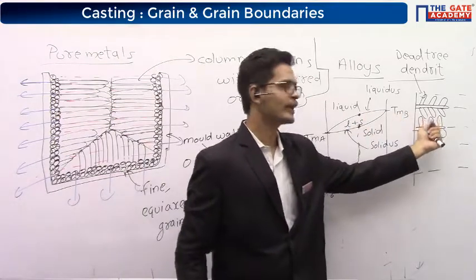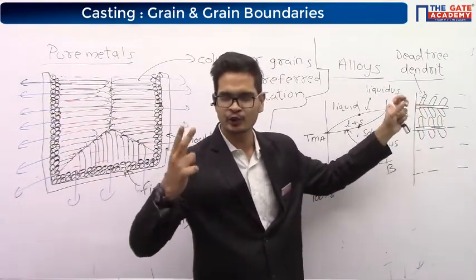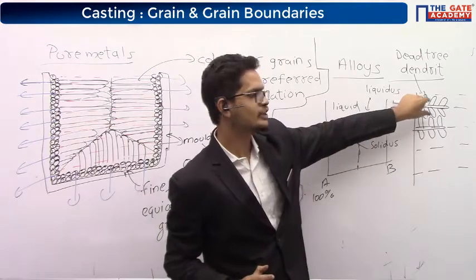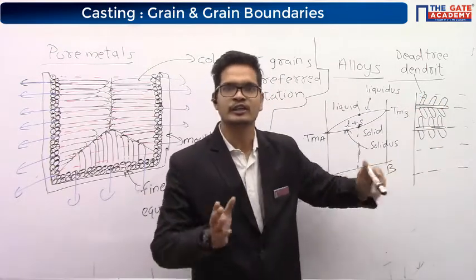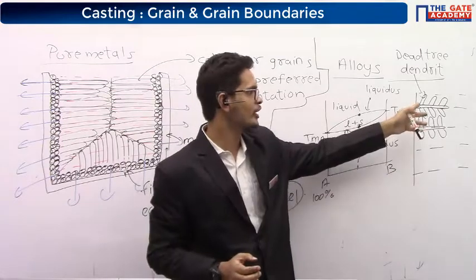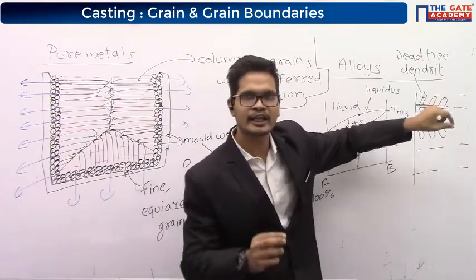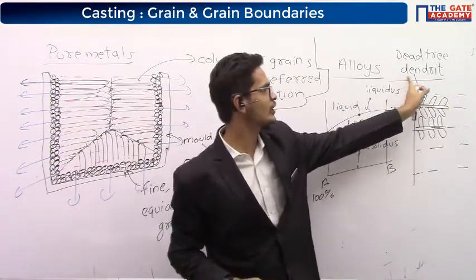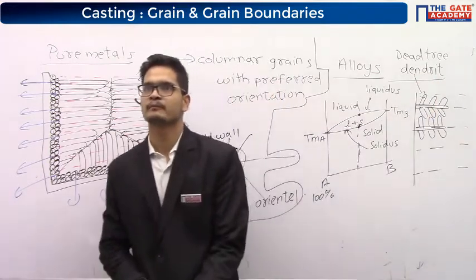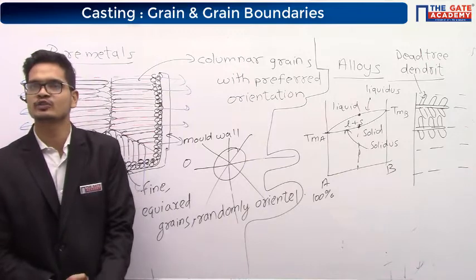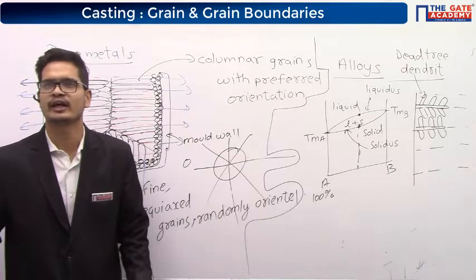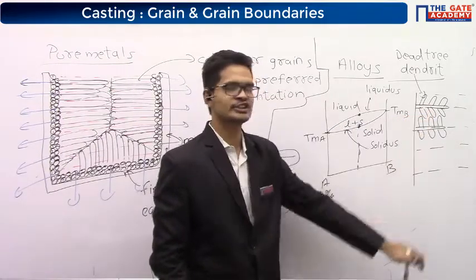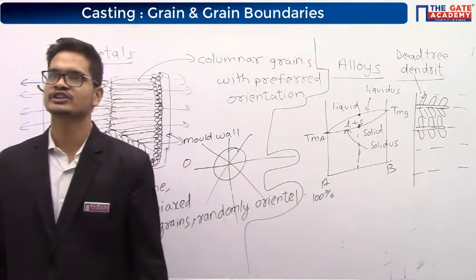The alloy has two metals with different melting point temperatures. Some portion is getting solidified and some is not. Whichever portion is getting solidified grows in a random fashion like a tree — dendritic in structure. The solid-liquid zone where both liquid and solid metal coexist is called as the mushy zone.